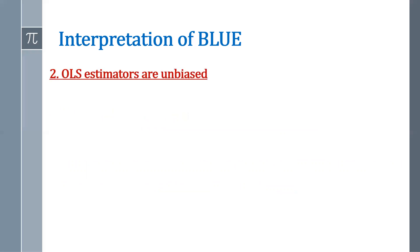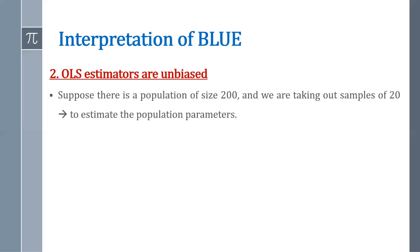Second, OLS estimators are unbiased. Let's understand this with the help of example. Suppose there is a population of size 200 and we are taking out samples of 20 to estimate the population parameters, that is alpha hat and beta hat.